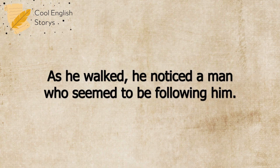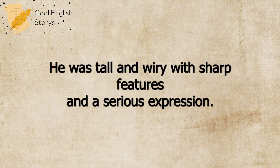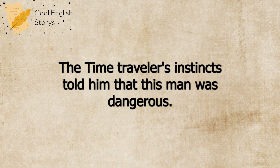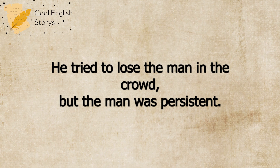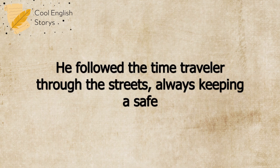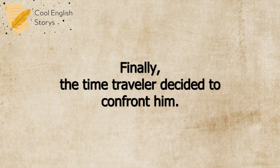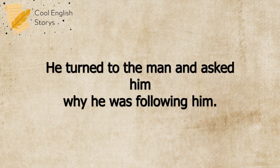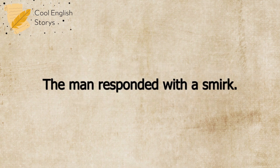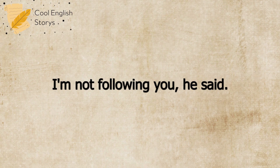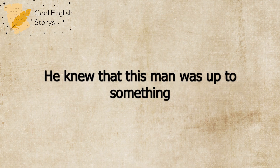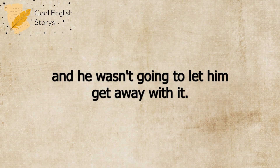As he walked, he noticed a man who seemed to be following him. He was tall and wiry, with sharp features and a serious expression. The Time Traveler's instincts told him that this man was dangerous. He tried to lose the man in the crowd, but the man was persistent. He followed the Time Traveler through the streets, always keeping a safe distance. Finally, the Time Traveler decided to confront him. He turned to the man and asked him why he was following him. The man responded with a smirk. 'I'm not following you,' he said. 'I'm just out for a walk.' The Time Traveler didn't believe him. He knew that this man was up to something, and he wasn't going to let him get away with it.